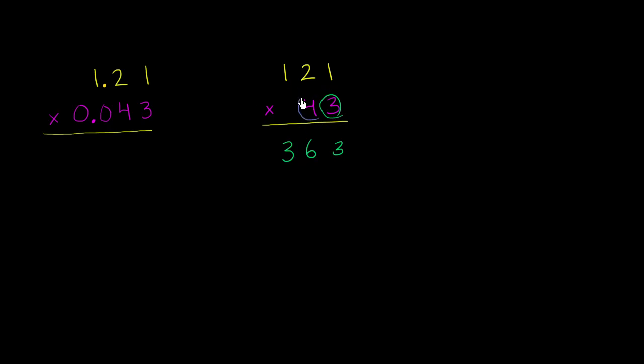And now we're going to go to the tens place. So this is a 40 right over here. So since we're in the tens place, let's put a 0 there. 40 times 1 is 40, 40 times 20 is 800, 40 times 100 is 4,000. And we've already known how to do this in the past.